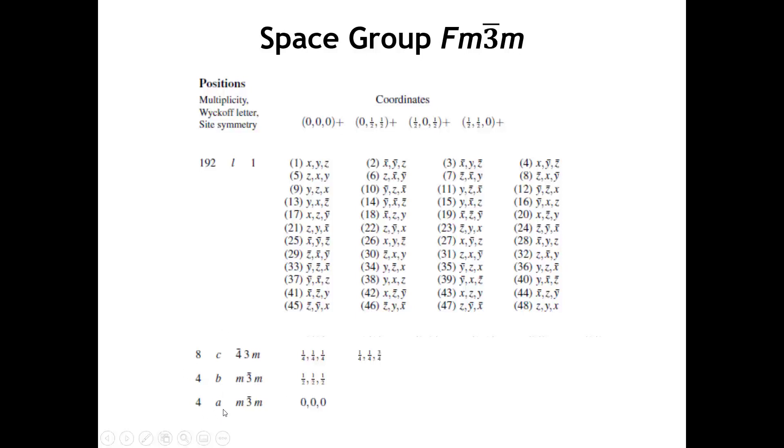Now, the 4a position, what do we see? Well, first of all, we see this is the symmetry. It has symmetry m3̄m. So, in Schoenflies, that would be Oh. And then, the fluoride ion has symmetry 4̄3m. So, in the Schoenflies symmetry, that is Td. So, this would be like a tetrahedral symmetry.